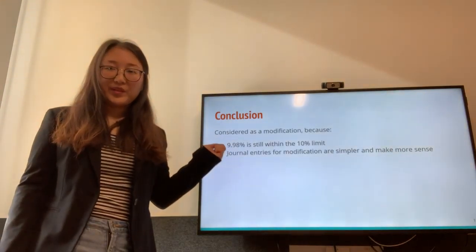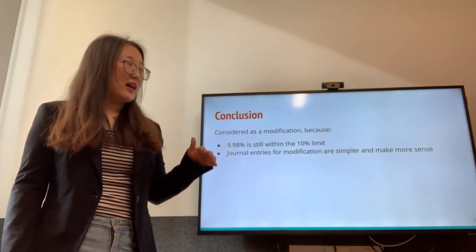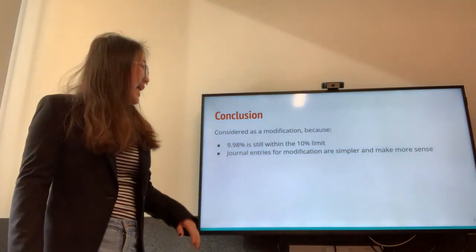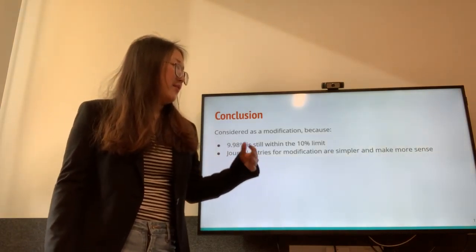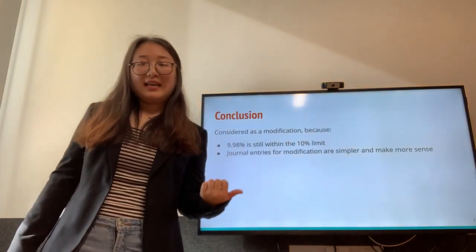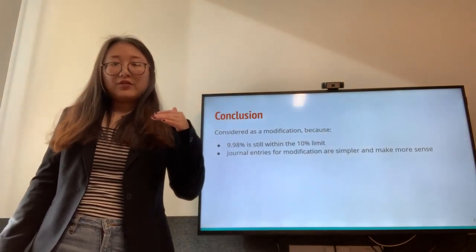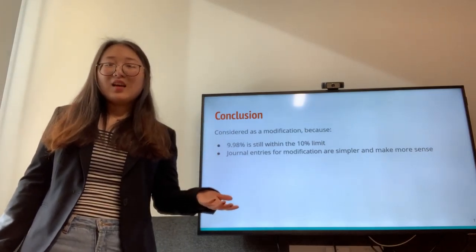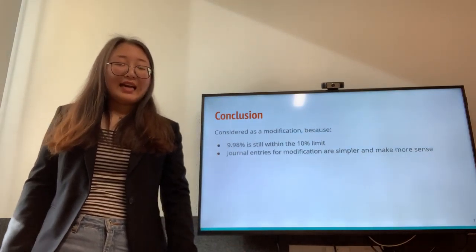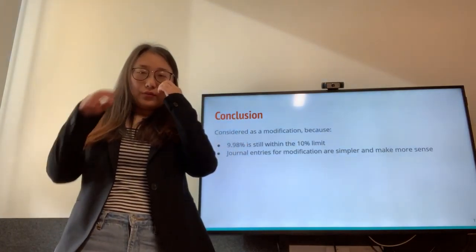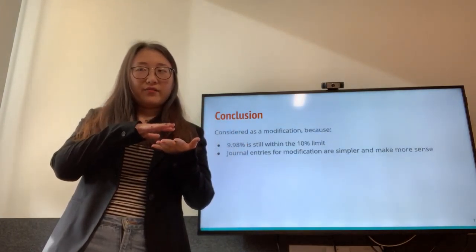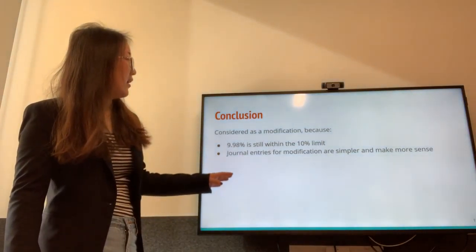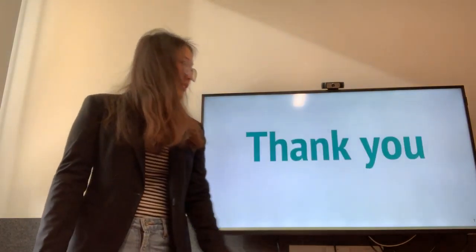In conclusion, this should be considered a modification. First, 9.98% is still within the 10% limit, so strictly speaking it qualifies as a modification. Second, the journal entries under modification are much simpler and make more sense. Under extinguishment, we would recognize a $7 million gain in 2019 that was not actually realized, and then increase the carrying value from $93 million back to $100 million over subsequent years — which is unnecessarily complex. Therefore, modification is the better choice.